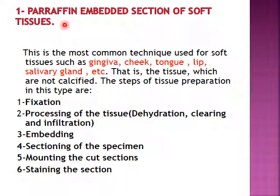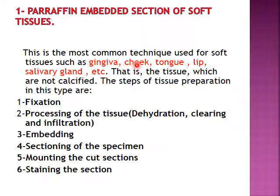First, the preparation of paraffin embedding section of soft tissue. This is the most common technique used for soft tissue such as gingiva, cheek, tongue, lip, salivary gland, and so on — tissues which are not calcified, meaning soft tissue that does not contain calcified material, which is hydroxyapatite crystals.